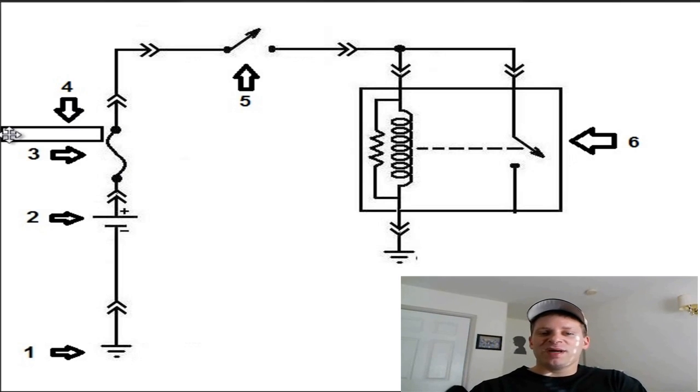Number 4 is pointing at this box next to the squiggly line. What does this box represent? And what should it say for this circuit?